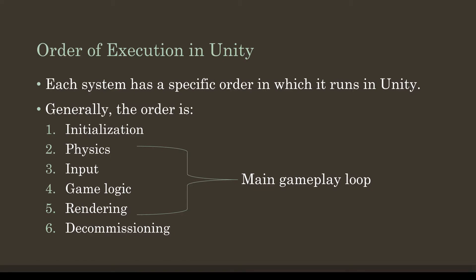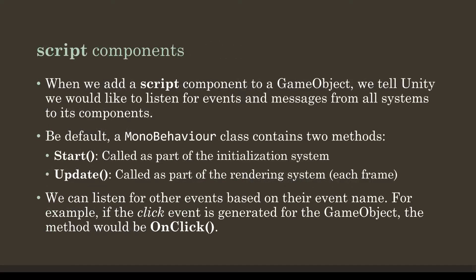When we create script components, we are intercepting all messages for that game object. We are telling Unity that we may respond to or react to very specific events and messages from all systems to all components corresponding to that game object. We are essentially putting the script component between the systems and the components, which allows us to use code to change various things in Unity.